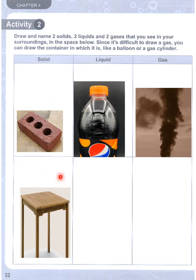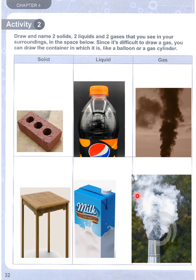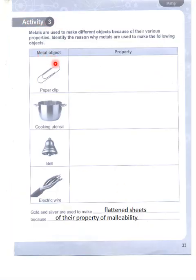A table is a solid — I have drawn simple things so that you can draw easily. Next, milk: I have drawn a milk packet as a liquid. Then I have drawn steam coming from a utensil, and a gas cylinder and balloon as examples of gas.